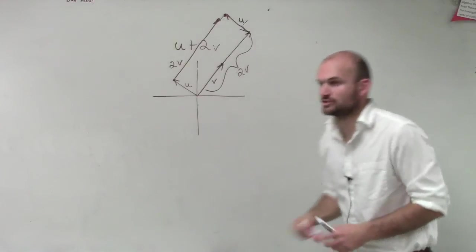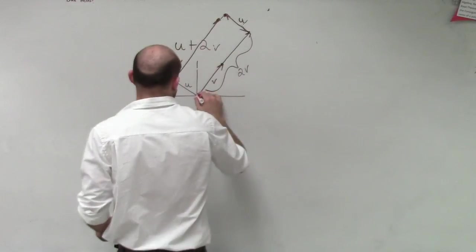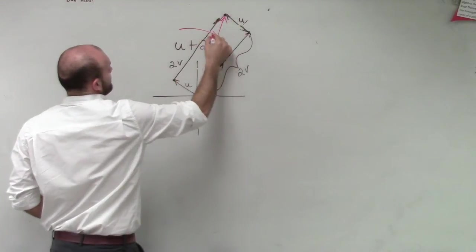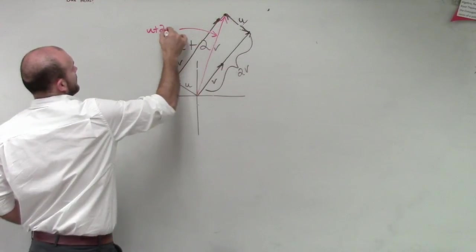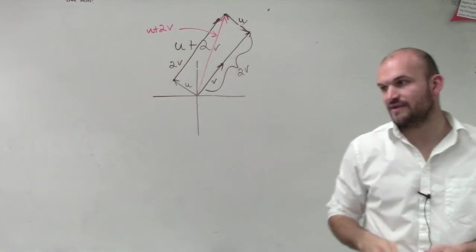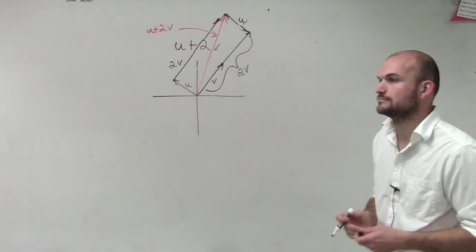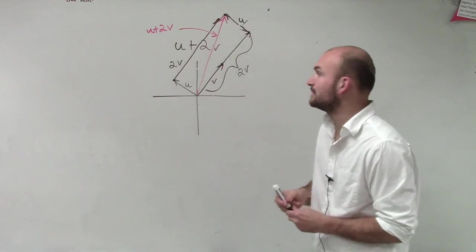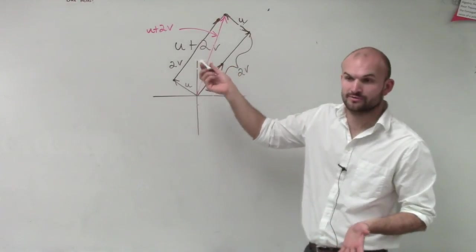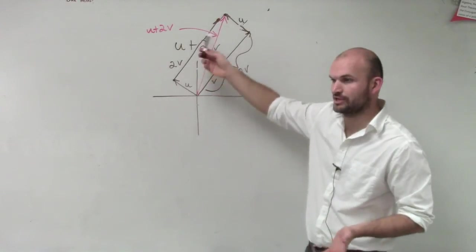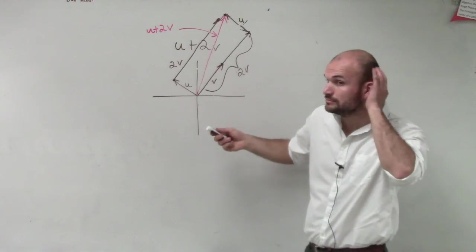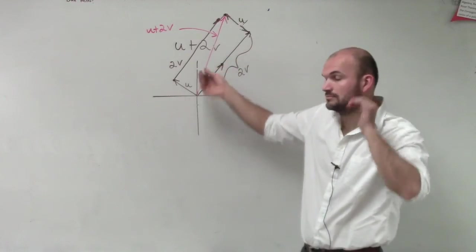Then, to find your resultant vector. So u plus 2v is going to be that red resultant vector. So that is technically your answer. The red is only really what's your answer, what they're looking for. They weren't really asking for any of the problem, but I used those to show you how to get to the red answer. That red is your answer.